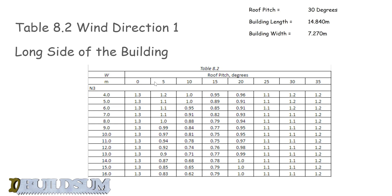You need to know the pitch of your roof and how wide or long your building is. This is table 8.2, which we're going to call wind direction 1, acting on the long side of the building. Our building has a pitch of 30 degrees, it is 14.840 meters long and 7.270 meters wide. Looking at the 30-degree column and the long side — our building is 14.8 meters, so we use 15 — we get a lateral wind pressure of 1.1 kPa acting on the long side.